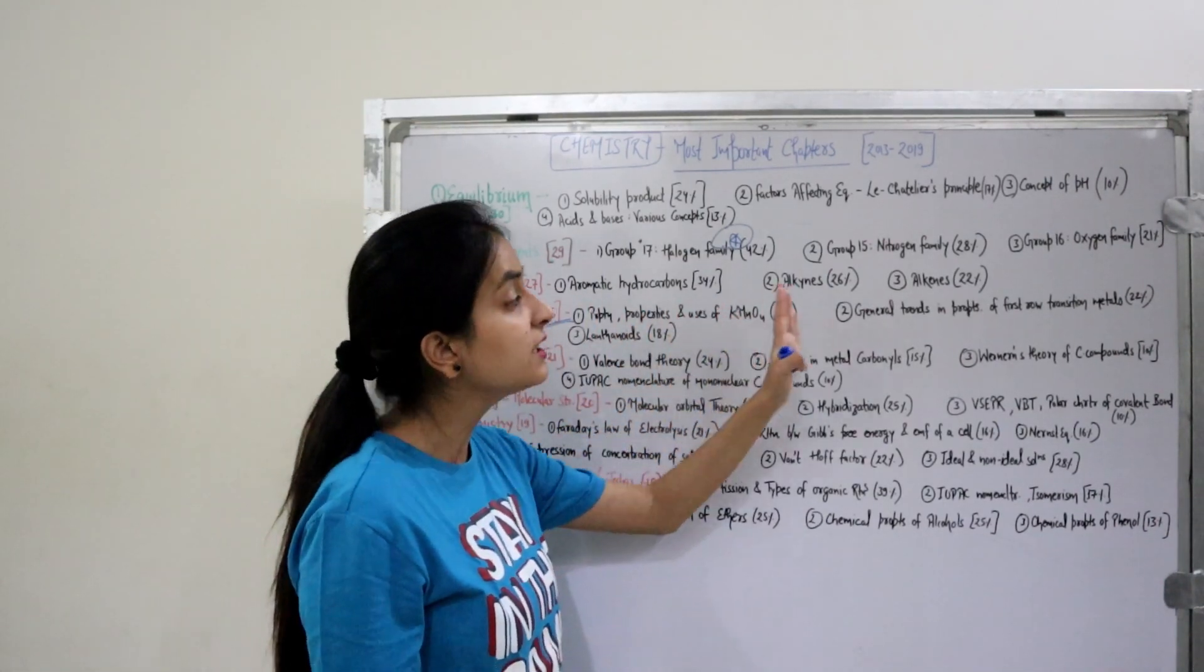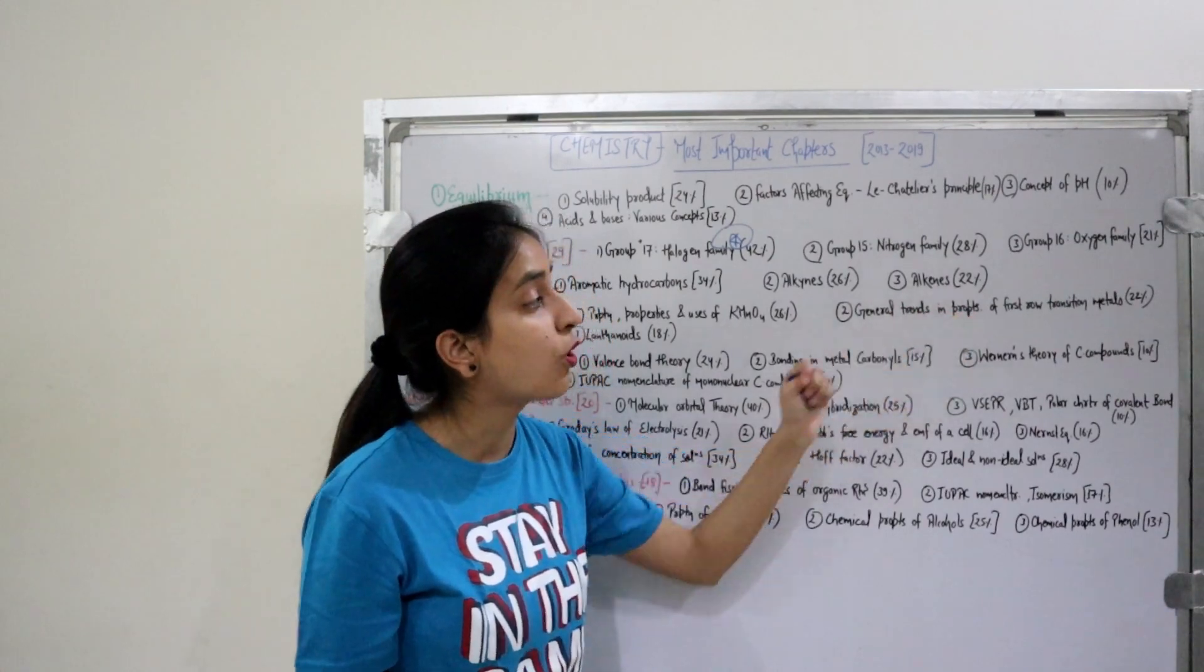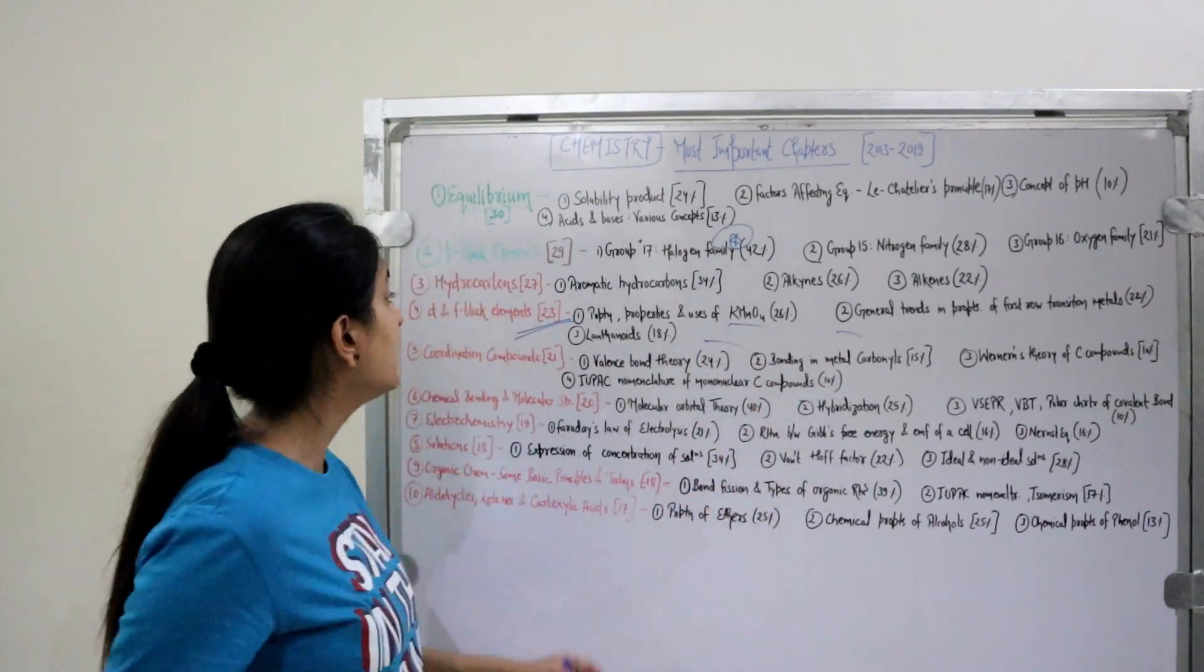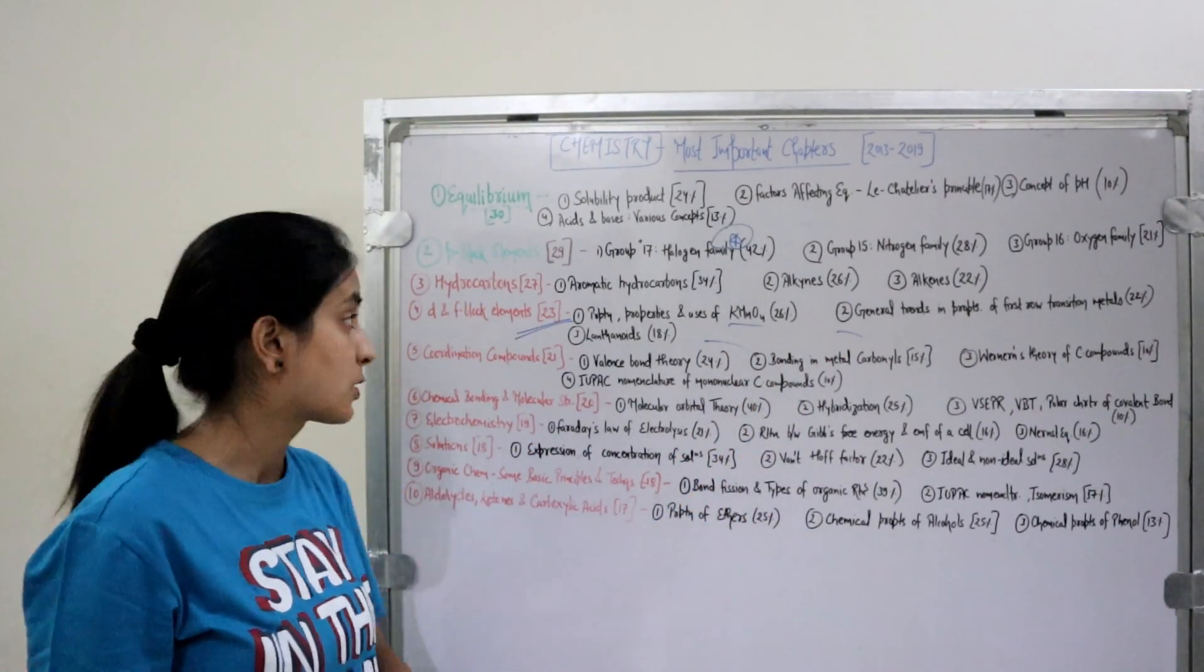D and F-Block Elements: 23 questions in the past 7 years. Most important topics: Preparation, Properties, and Uses of Potassium Permanganate; General Trends and Properties of First-row Transition Metals; and Lanthanoids. These are the most important topics in your D and F-Block Elements chapter.